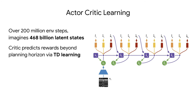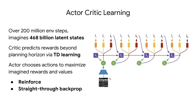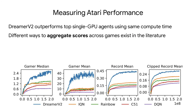A critic network learns to predict the rewards beyond the planning horizon using temporal difference learning. An actor network learns to choose actions that maximize the imagined rewards and values, either through reinforced gradients or by directly backpropagating through the imagined trajectories using straight-through backpropagation.